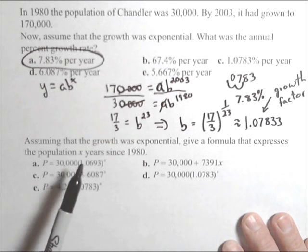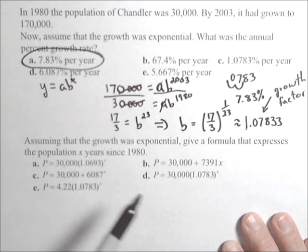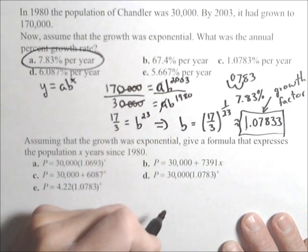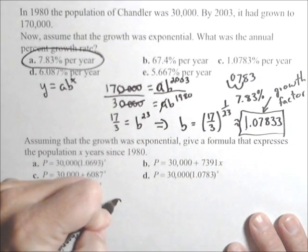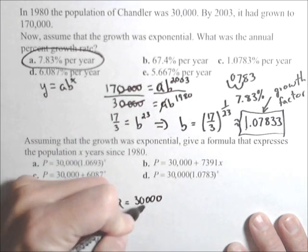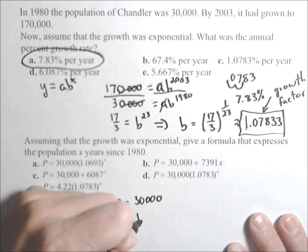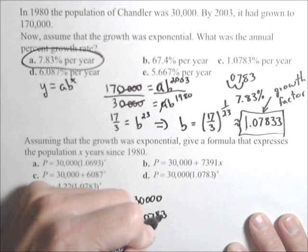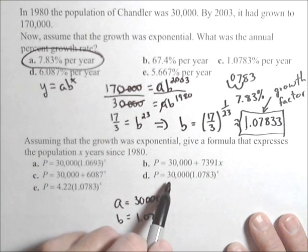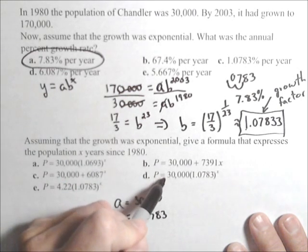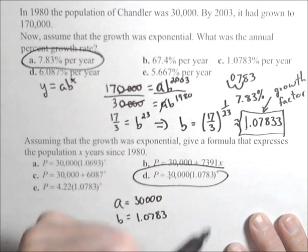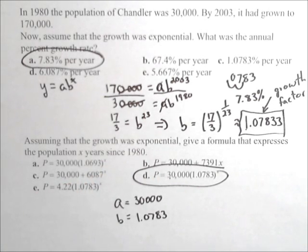So our annual growth rate is 7.83% per year. Now, to give a formula where x is the number of years since 1980, we have our growth factor b that gets raised to the x. We need our a—since we're using 1980 as our initial year, 30,000 is our initial value. Our base is 1.0783. Putting it into the model, we have P = 30,000(1.0783)^x, and that's our formula.